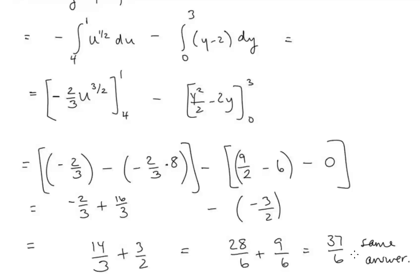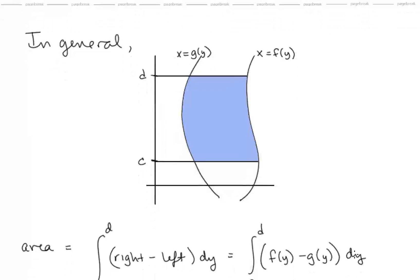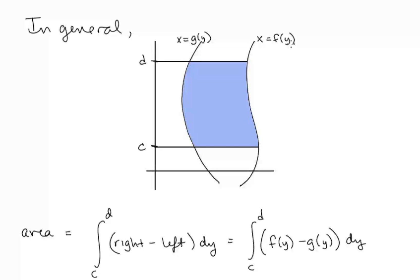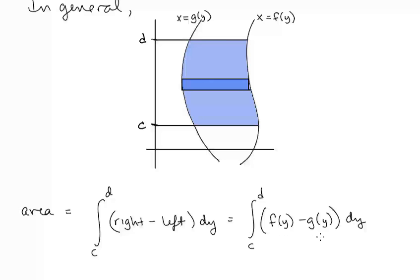In general, when we have x equals f of y on the right and x equals g of y on the left, to find the area between the curves we integrate right minus left from c to d on y. That's f of y minus g of y. It's always right minus left because the values on the right are bigger, so we get a positive distance.